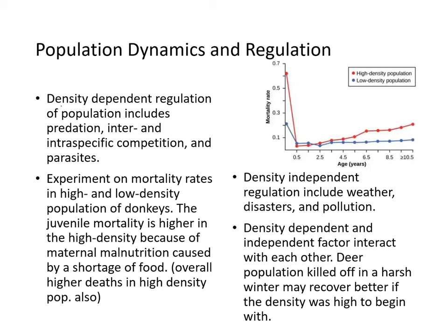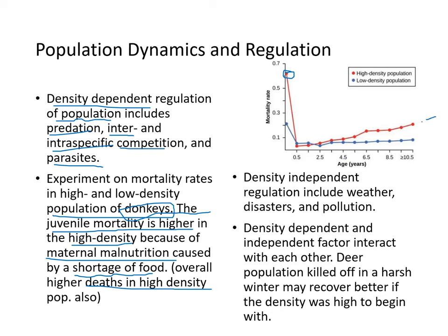Density-dependent regulation of populations includes predation, inter- and intraspecific competition, and parasites. Interspecific competition is between different species; intraspecific is within the same species. Experiments on donkeys show juvenile mortality is higher in high-density populations because maternal malnutrition causes food shortage, and overall death rates are also higher in high-density populations.